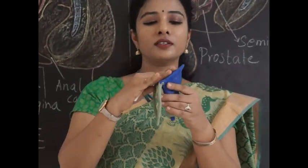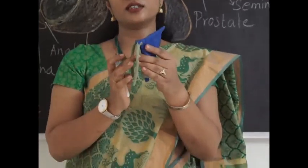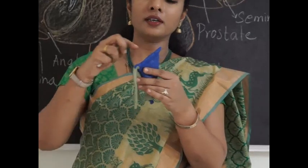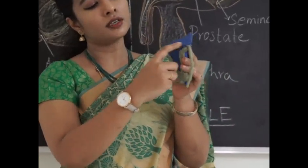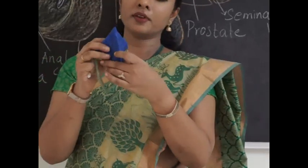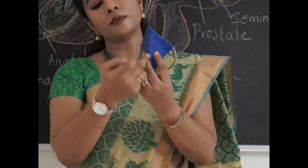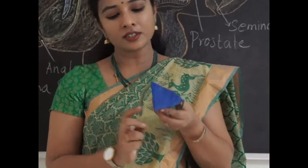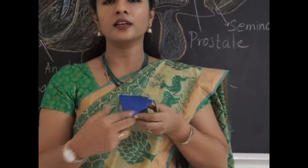The superior surface and the posterior surface are separated by the posterior border. The two inferolateral surfaces are separated by the anterior border. And the superior surface is separated from the inferolateral surfaces on either side by the lateral border.